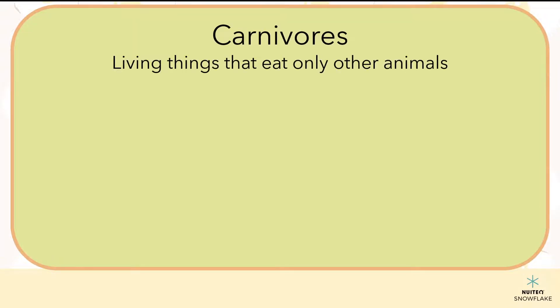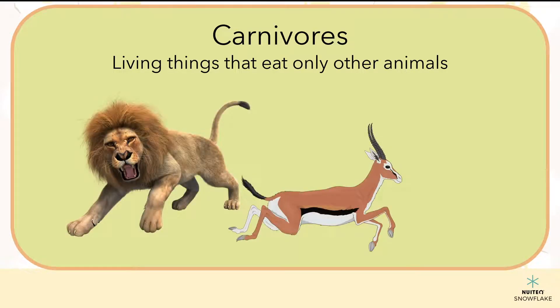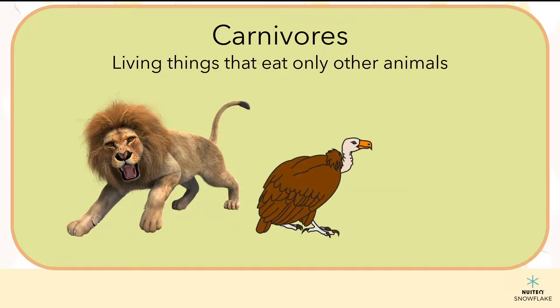Other living things do not eat plants — they eat other animals. These are called carnivores. A carnivore only eats other animals and gets its energy from the fat, muscles, and other tissues of different animals. Some examples of carnivores are lions, vultures, and frogs.